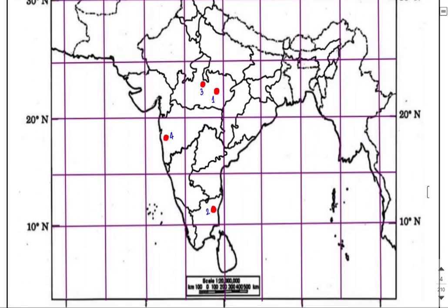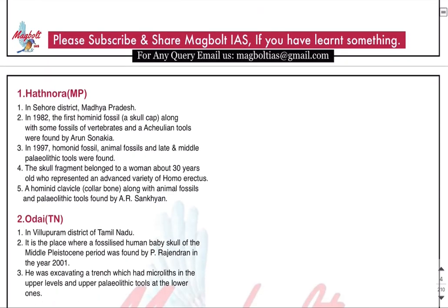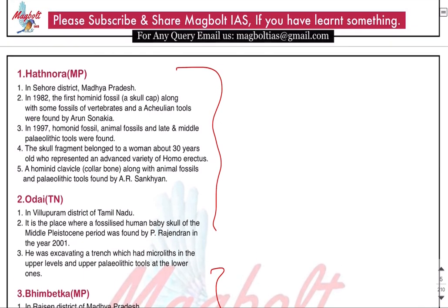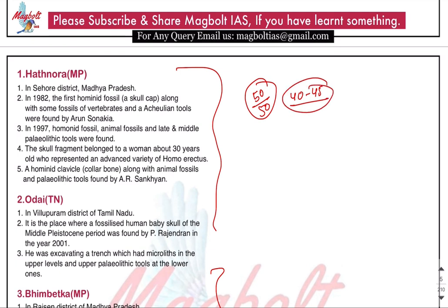Here you can see that on the map, along with the state-wise view, you can identify the sites very easily. For detailed information, the PDF has been prepared with all information extracted from authentic sources, so you can write exact points in the examinations. The target should be to get 40 to 45 plus marks. When you complete this course and lectures, you will definitely be in a position to achieve that. Please subscribe and share if you have learned something from here.